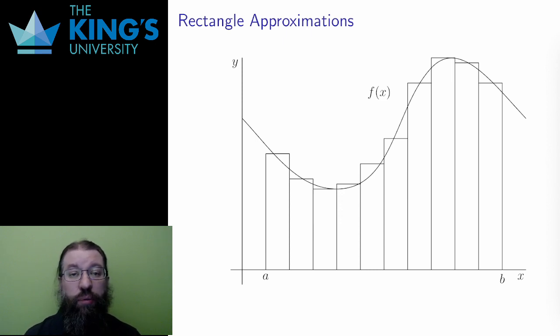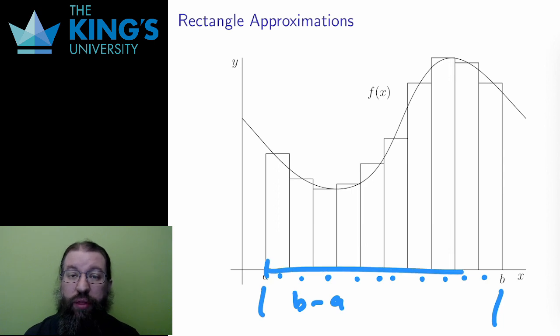For the area under a curve between a and b in the domain, I approximate with rectangles. I'll assume that these are all the same width. The total distance from a to b is b minus a. If there are n rectangles, the width of each rectangle is b minus a over n.